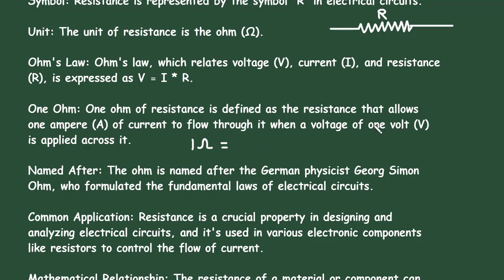It will be 1 volt divided by 1 ampere. This is called 1 ohm: 1 volt upon 1 ampere is equal to 1 ohm.